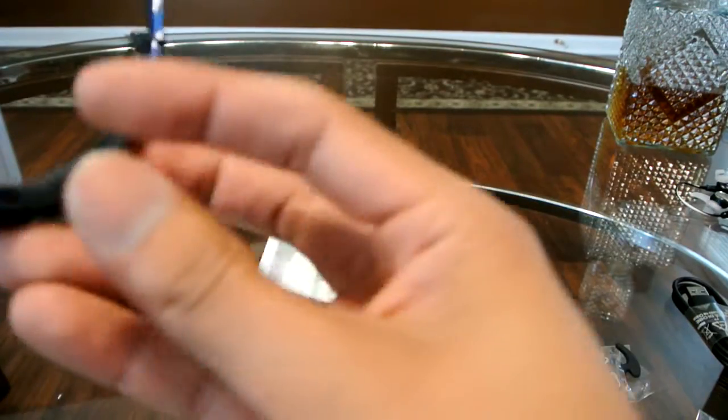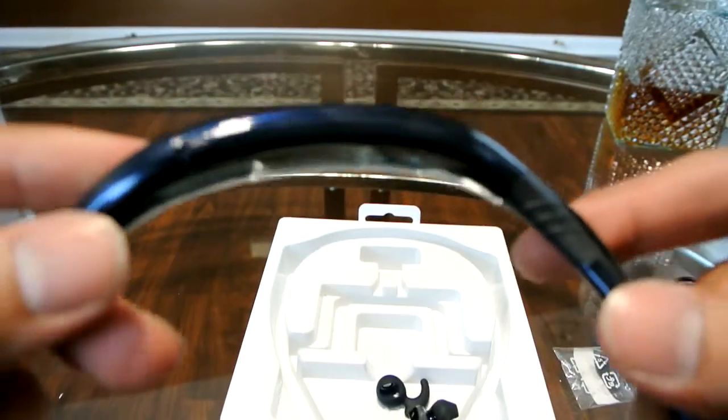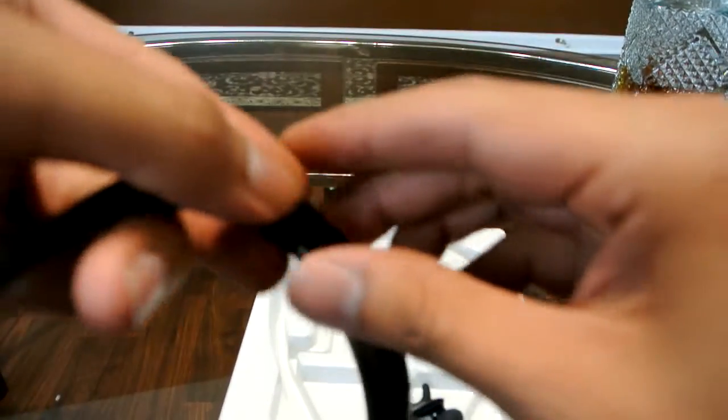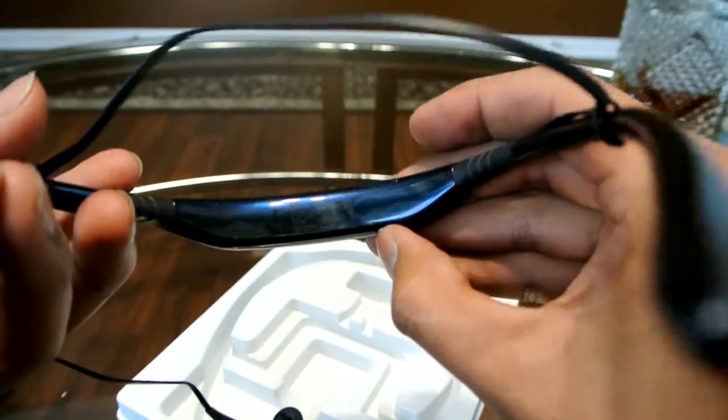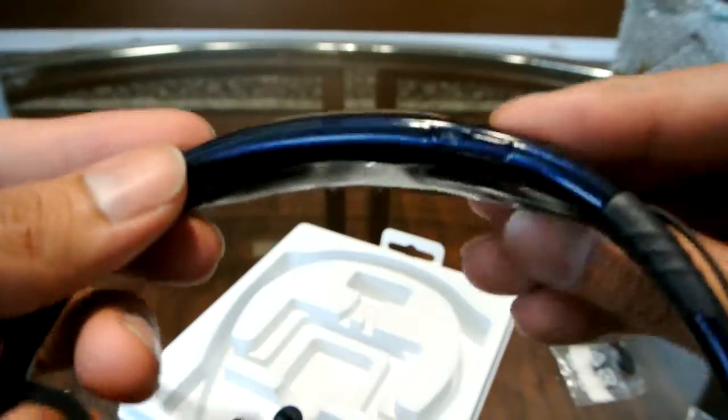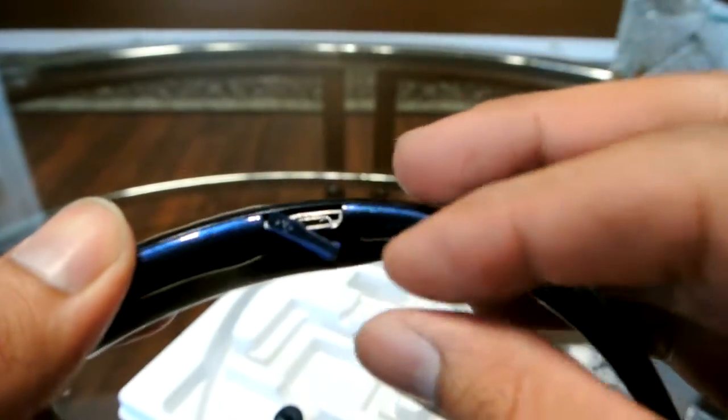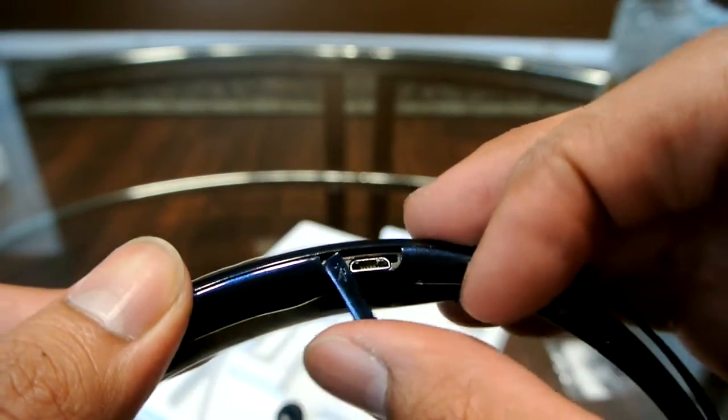So onto the headset itself. Here's the back. On the back we have the on and off switch. Pairing was fairly easy to my device. On top here we have the charging port. You just simply pop up the little box, slide it open and there it is. It is a micro USB.